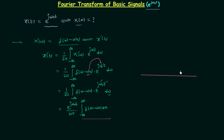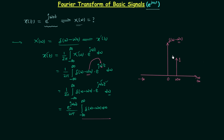We are integrating the unit impulse signal δ(ω − ω₀), which is a unit impulse located at ω = ω₀. When ω equals ω₀, the impulse has area equal to 1, and we are integrating from minus infinity to infinity. Since ω₀ is included in this range, the overall result of the integration is 1, because δ(ω − ω₀) equals zero at all other frequencies.